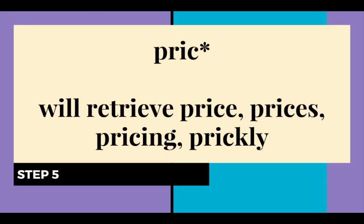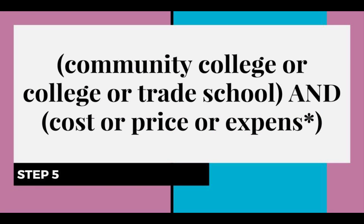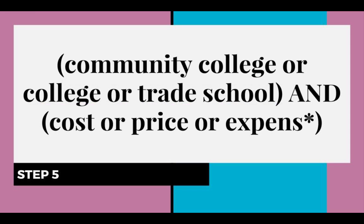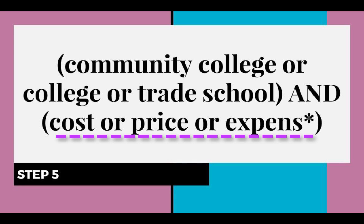So ultimately, our refined search will look like this. In our first set of parentheses we will have community college OR college OR trade school. Then we will have our connector AND, and then in our final set of parentheses we will have cost OR price OR EXPENS*.